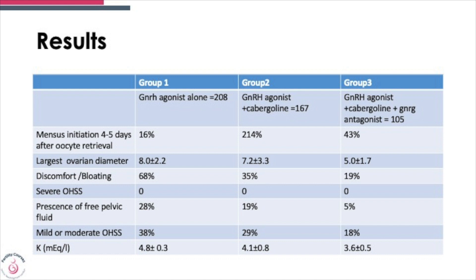Looking at the results: initiation of menses — when the period started after egg collection — was within four to five days in 43% of cases when you combined both cabergoline and the antagonist. Key outcomes including ovarian diameter, discomfort, bloating, severe ovarian hyperstimulation, presence of free fluid, and mild or moderate ovarian hyperstimulation were assessed. Mild or moderate ovarian hyperstimulation was only present in 18% of cases. If you combine cabergoline and the antagonist, you're more likely to see a faster resumption to normal, less discomfort, and the ovaries become much smaller, with the risk of even mild to moderate ovarian hyperstimulation significantly decreased.